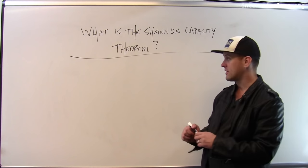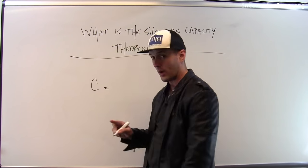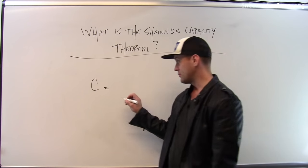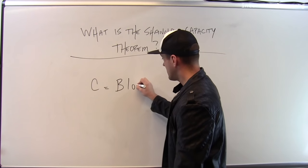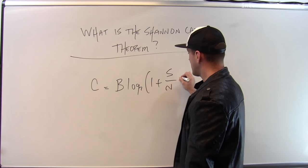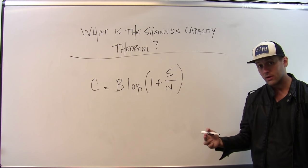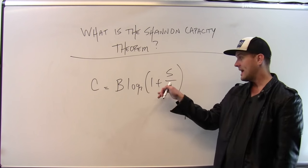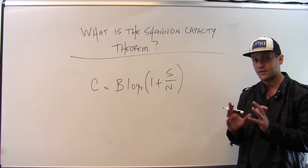So what is the Shannon Limit? The Shannon Capacity Theorem says the capacity of a wireless link is equal to the bandwidth times the logarithm of 1 plus S over N, where S is the received signal power at the receiver and N is additive Gaussian noise. So let's try to explain this.